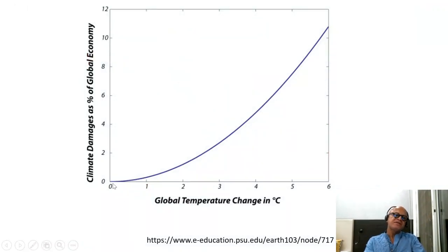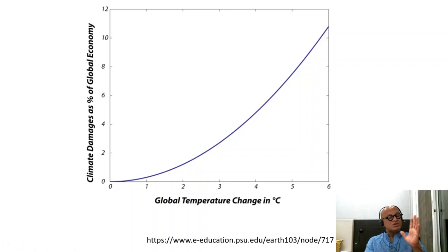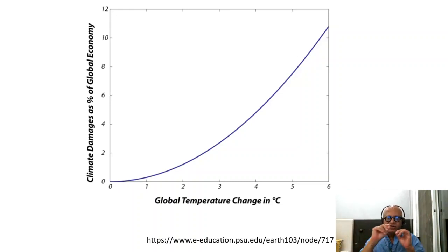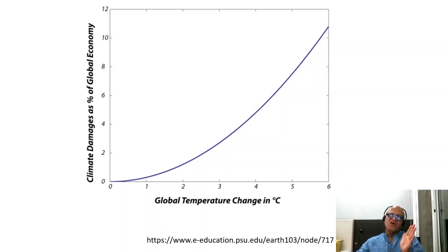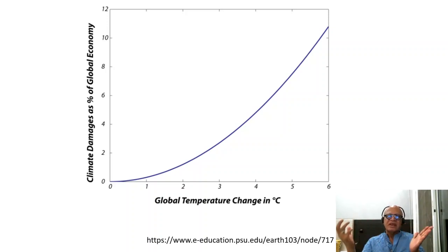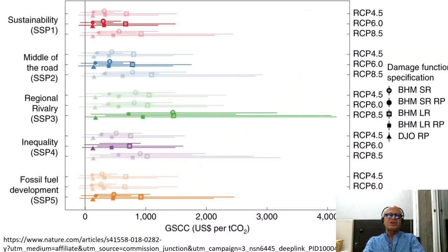People have estimated climate damages as a percentage of the global economy with warming. There are important details like discount rates — how much a dollar today will be worth in future years, since the value drops over time. When investing in adaptation and mitigation, the value of your investment must be estimated in terms of discounted present value of future benefits. The discount rate is not well constrained — assuming one percent, three percent, or ten percent gives very different values of climate damages.